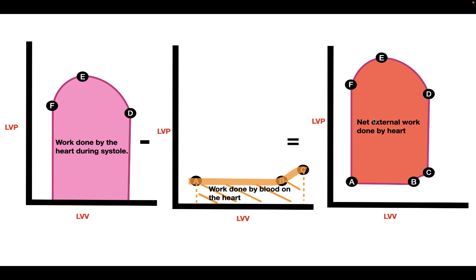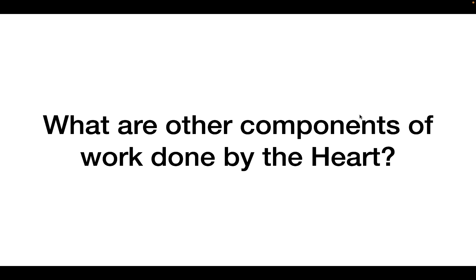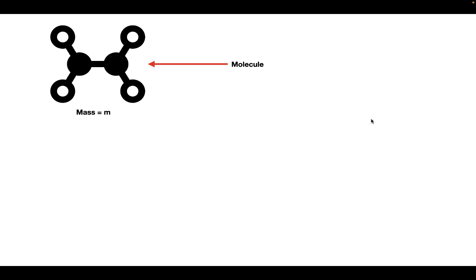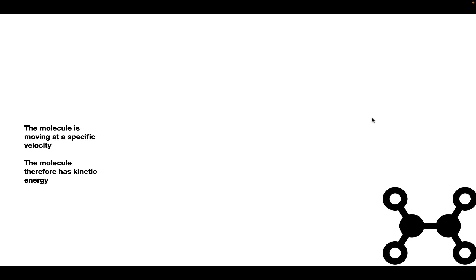This net external area is the net external pressure-volume work done by the heart. However, there are other types of work done by the heart beyond pressure-volume work. The other type is kinetic energy. To understand kinetic energy, consider a molecule with a certain mass moving at a specific velocity — its kinetic energy equals one half times mass times velocity squared.